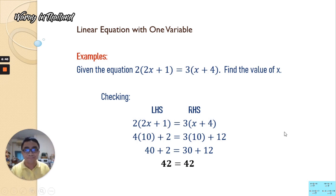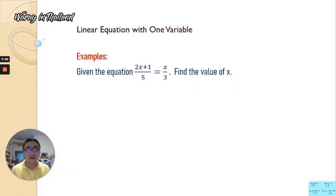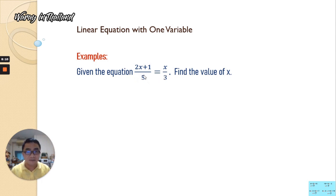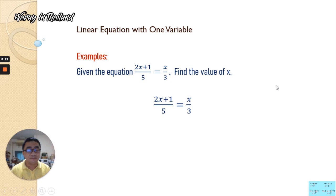Now we have our third example. Given the equation (2x plus 1) over 5 is equal to x over 3. Find the value of x. As you can see, we have rational expressions on both sides, so we're going to eliminate the denominators first. There are two methods: you can introduce the LCM on both sides, or you can cross-multiply the denominators. For this example, I'll use cross-multiplication: multiply 5 with x and multiply 3 with (2x plus 1).